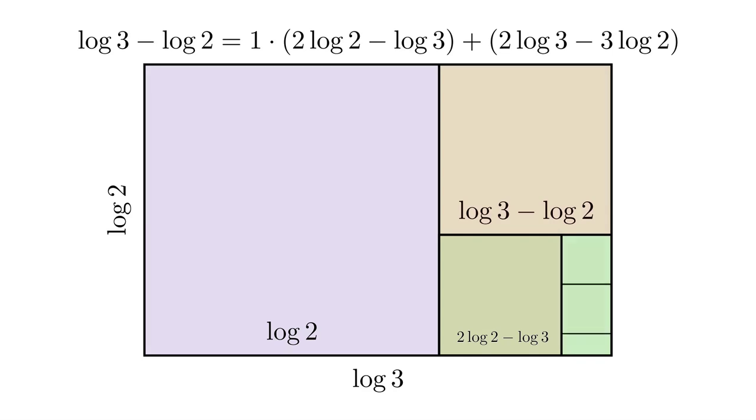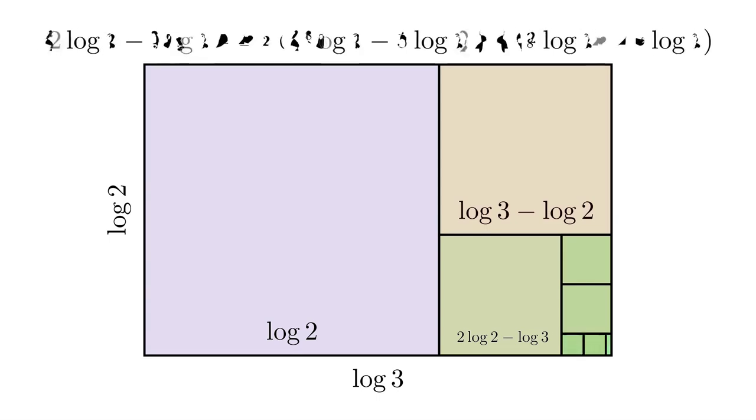Now in this next stage, the quotient is 2, which I can visibly see because I can fit two squares in there. And then I'll record that in the next step of the Euclidean algorithm. So now I'll divide 2 log 3 minus 3 log 2 by 8 log 2 minus 5 log 3. I'll get a quotient of 2 and I'll record that in this next stage of the Euclidean algorithm.